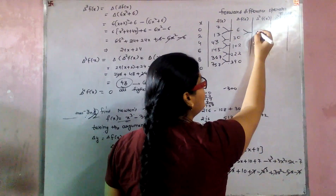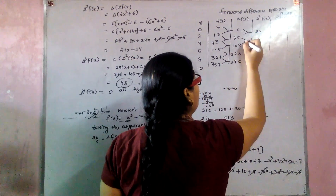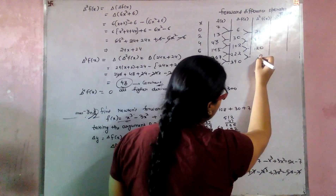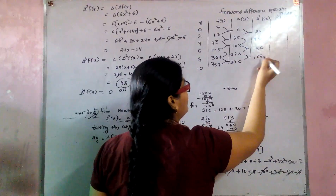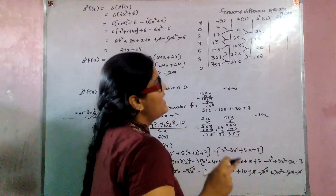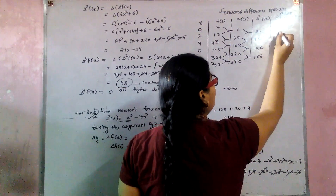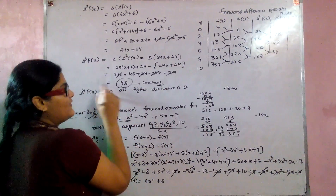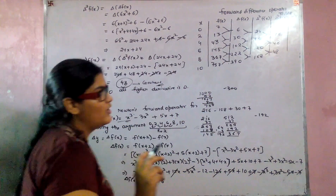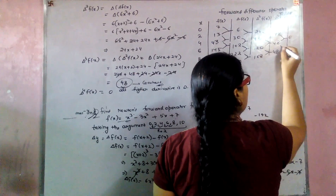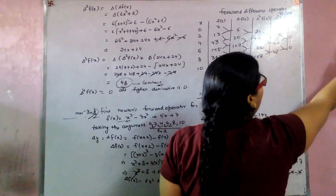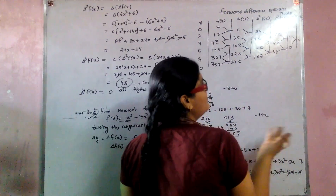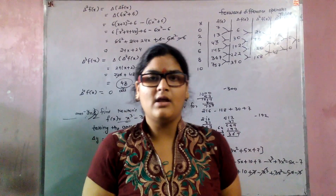Taking the fourth order differences: 48-48=0, 48-48=0. Since del³f(x) is constant at 48, all higher derivatives are 0. We must find values until a single value remains, which comes out as 0. This confirms that for a degree 3 polynomial, the third difference is constant and all higher differences are zero.